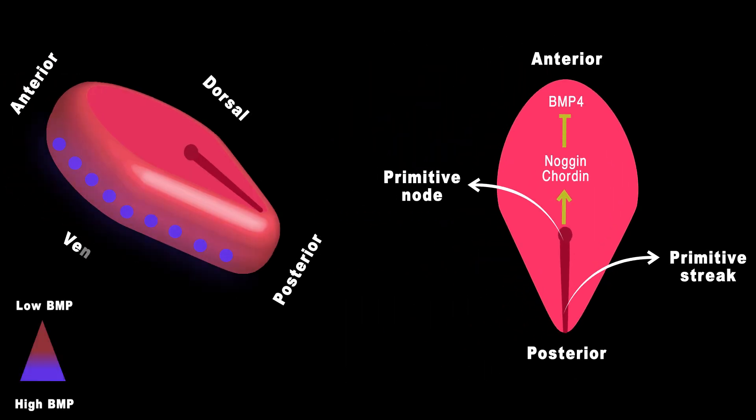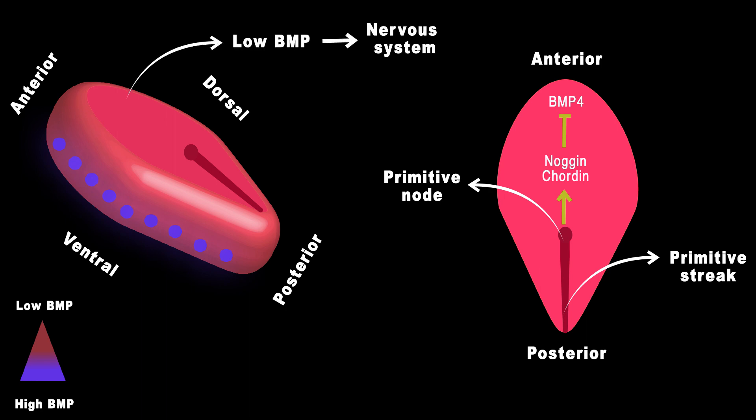This gradient helps establish the dorsal-ventral axis, which is an important reference for development. By default, in the absence of the BMP signal, the ectoderm would give rise to neural tissue.